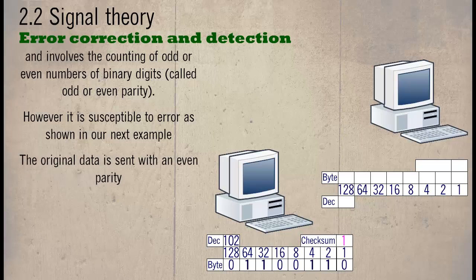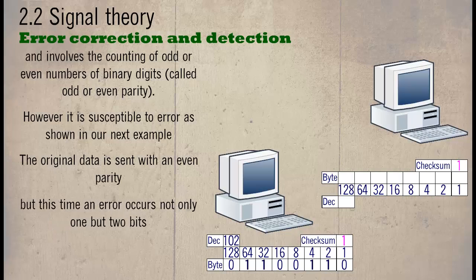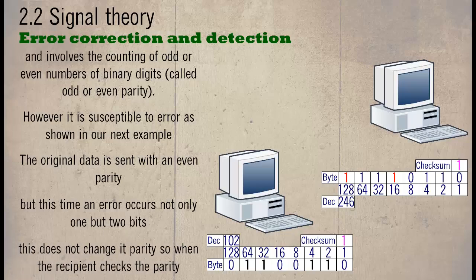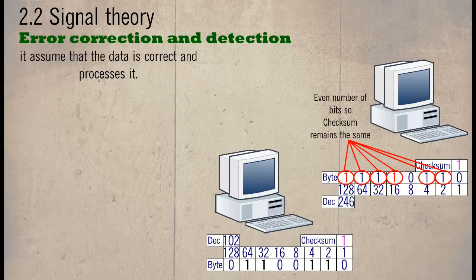The original data is sent with an even parity, but this time an error occurs not on only one but two bits. This does not change the parity, so when the recipient checks the parity, it assumes that the data is correct and processes it.